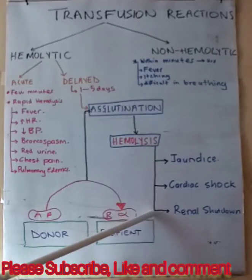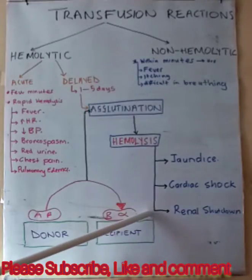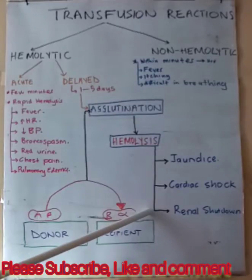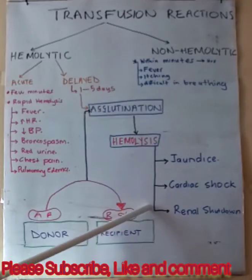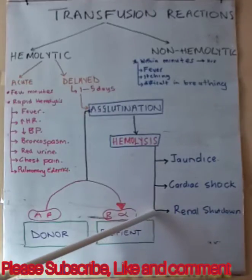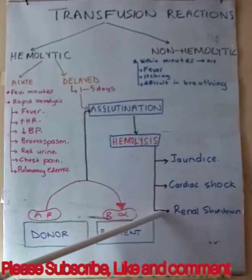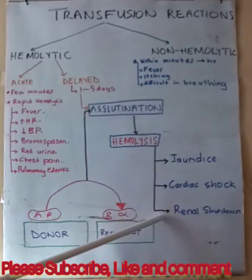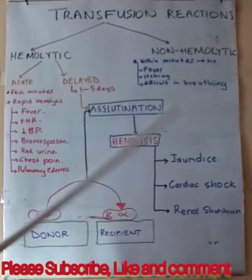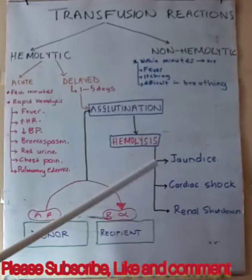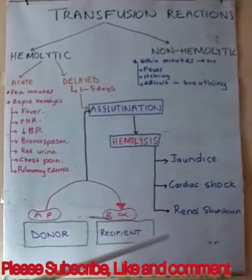The last complication is renal shutdown, which is simply a dysfunction of the kidneys. Toxic substances from hemolyzed cells cause constriction of blood vessels in the kidney. In addition, these toxic substances along with free hemoglobin are filtered through the glomerular membrane and enter the renal tubules. Due to poor reabsorption, these substances obstruct the renal tubules.